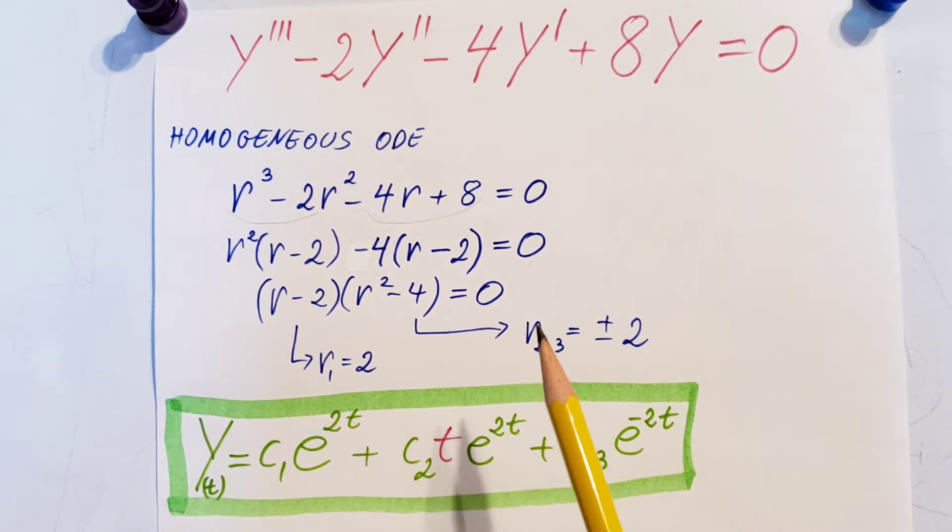Now plus, from here, the second root, let's take plus 2. Now plus 2 is exactly the same as this one, so we cannot just simply write c2 e to the 2t. We need to make sure they are different, so we need to make sure we don't forget this. We need to multiply by a t.